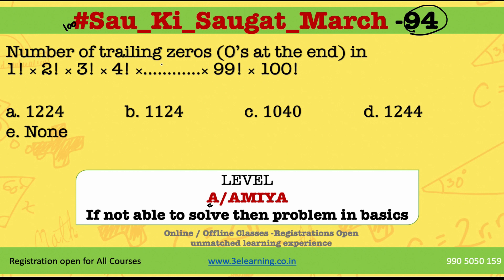The question is: number of trailing zeros — that means zeros at the end — in the calculation of this number. Please pause the video and try to solve this question.